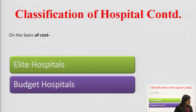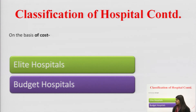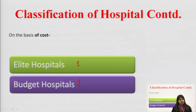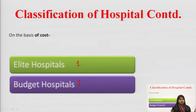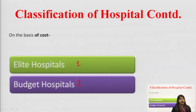Based on cost, hospitals are divided into elite hospitals and budget hospitals. Elite hospitals are those where, along with medical care, patients have amenities like a TV, fridge, and air conditioning in their room — extra luxuries for which the patient is charged. Budget hospitals are those where such luxury items are not provided; the patient pays only for the pharmacotherapy being given.